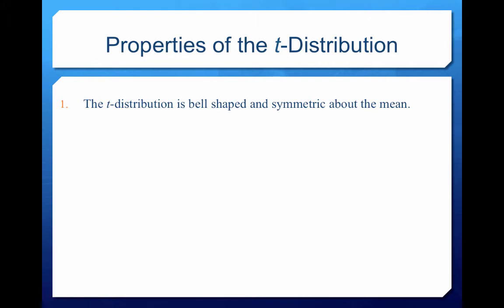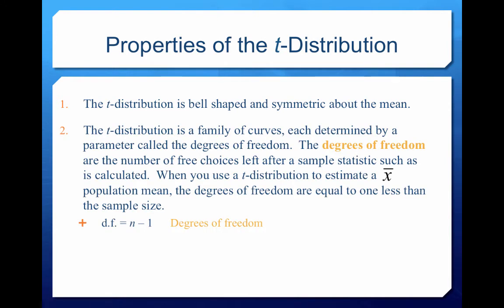The t-distribution is bell-shaped and symmetric about the mean. It is actually a family of curves, each determined by a parameter called the degrees of freedom. The degrees of freedom are the number of free choices left after a sample statistic such as x-bar is calculated. When you use a t-distribution to estimate a population mean, the degrees of freedom are always equal to one less than the sample size.